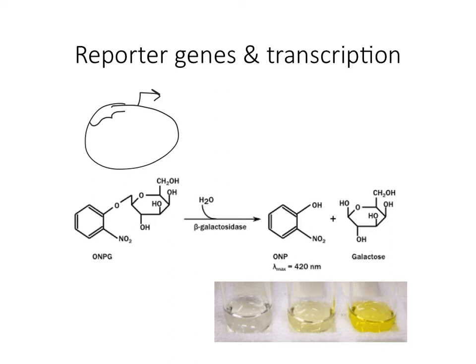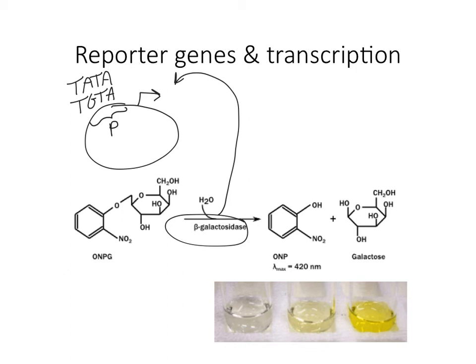The reporter gene is on a plasmid that we can put into yeast. In the promoter, either TATA or TGTA is present — that's one variable. Downstream of the promoter is the gene that encodes the enzyme beta-galactosidase.